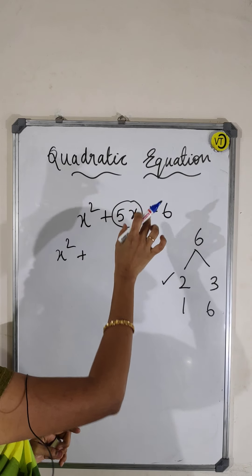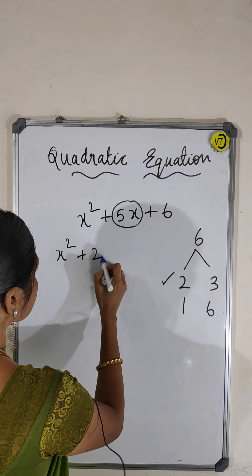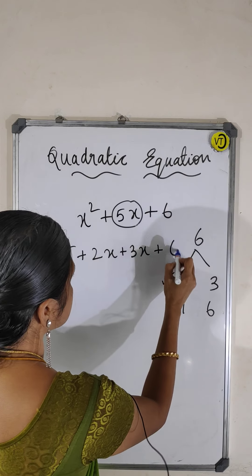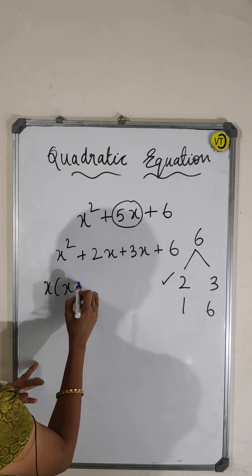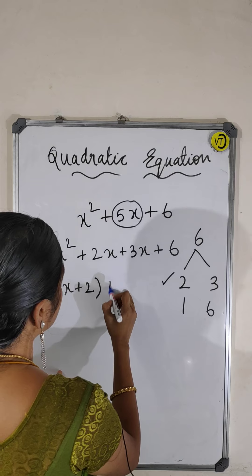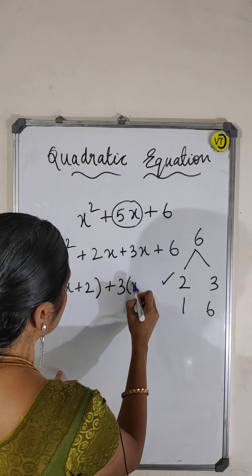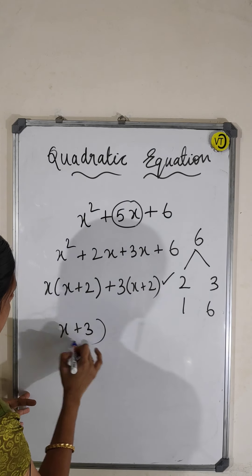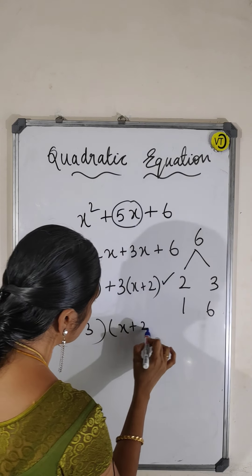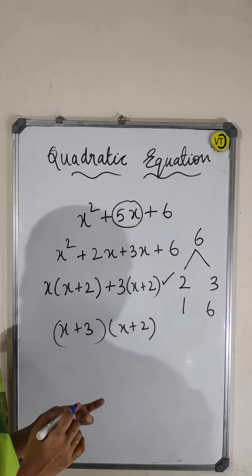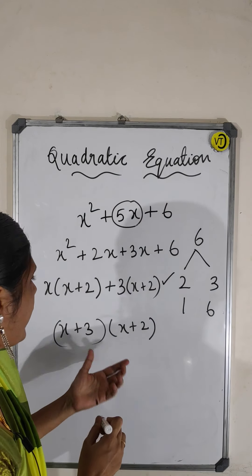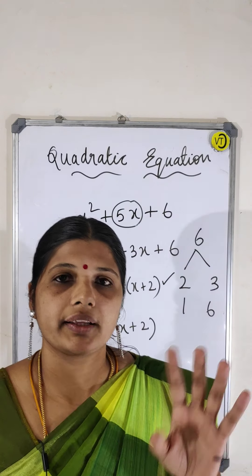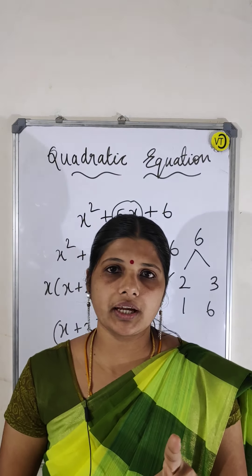Splitting the middle term 5x into 2x + 3x, we get x² + 2x + 3x + 6. Taking x as common from the first pair and 3 as common from the second pair gives us (x+3)(x+2). So we get two factors.